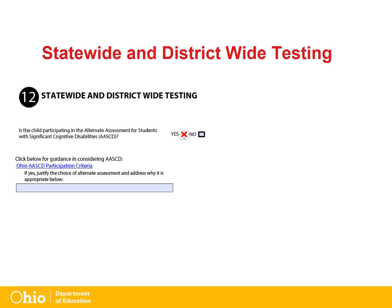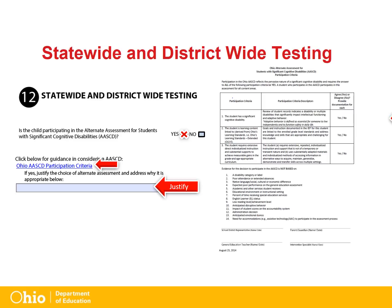For those taking the Alternate Assessment, the IEP team must justify the decision of providing this type of assessment and fully explain how the conclusion to use the Alternate Assessment was determined. The new IEP form has a link to the Participation Criteria form. For every student who is being considered for the Alternate Assessment, the Participation Criteria form must be completed in its entirety, answering all three questions with a Yes or No response.